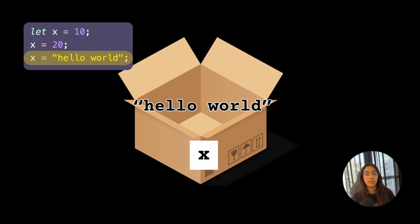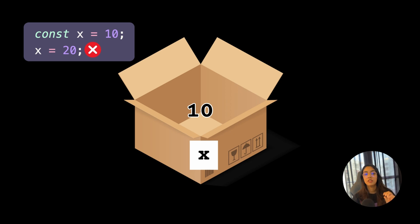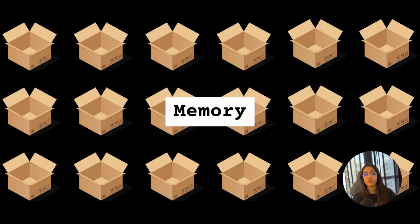But if this variable was created using the const keyword instead, then you could only assign a value inside of this box once during initialization and cannot change it throughout its lifetime. These boxes or variables are simply storage locations in memory. The place where these variables are stored has some sort of address known as the memory address.